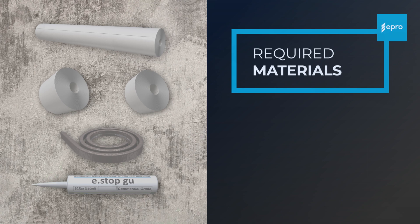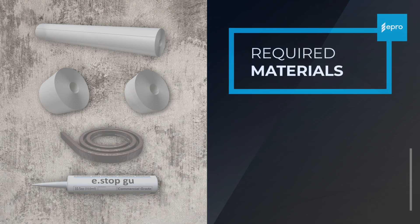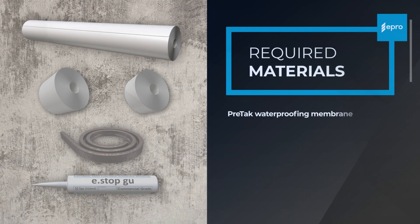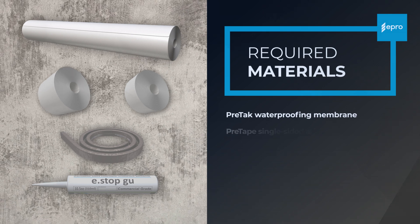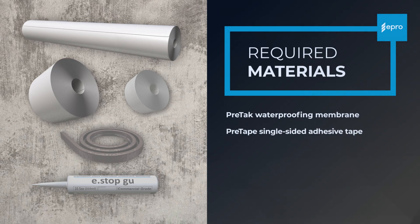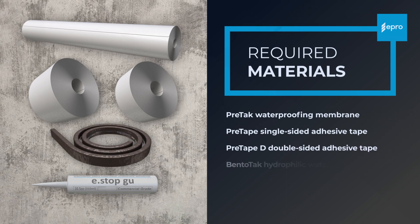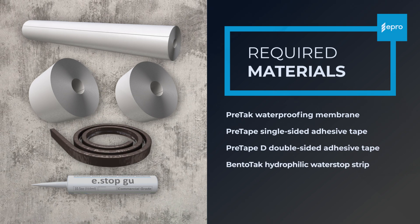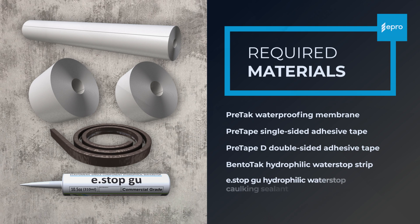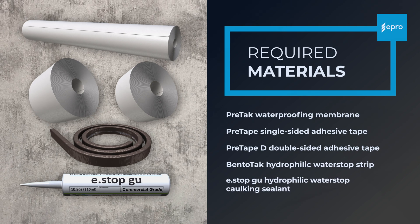The following materials are utilized in this video tutorial: one roll of PRETAC waterproofing membrane, one roll of PRETAPE single-sided adhesive tape, one roll of PRETAPE-D double-sided adhesive tape, one roll of BENTOTAC hydrophilic water stop, and one cartridge of E-STOP-GUE hydrophilic water stop sealant.